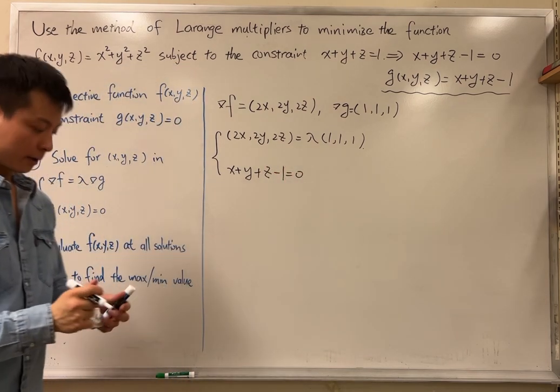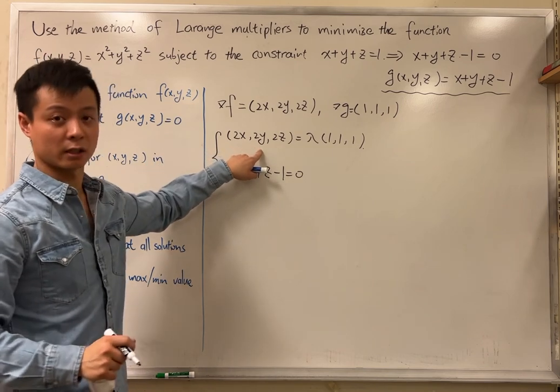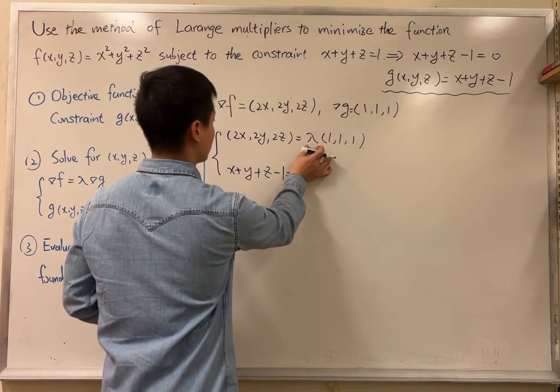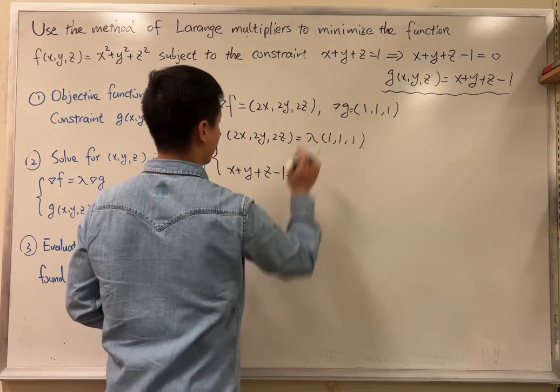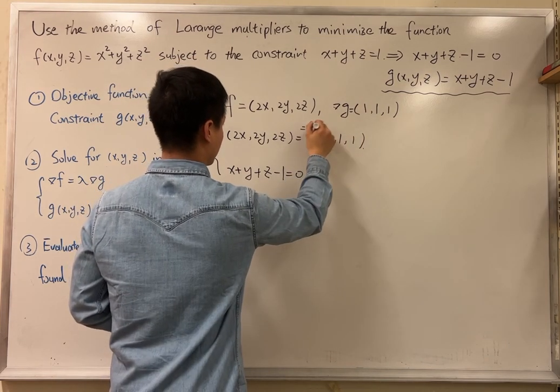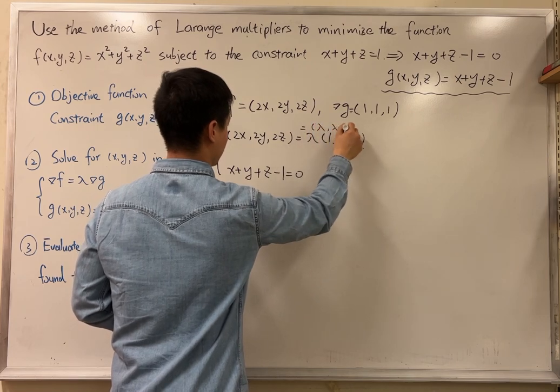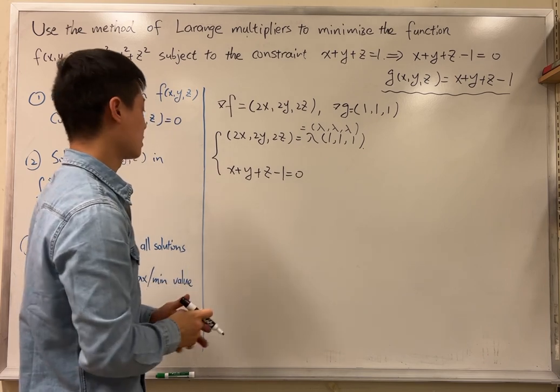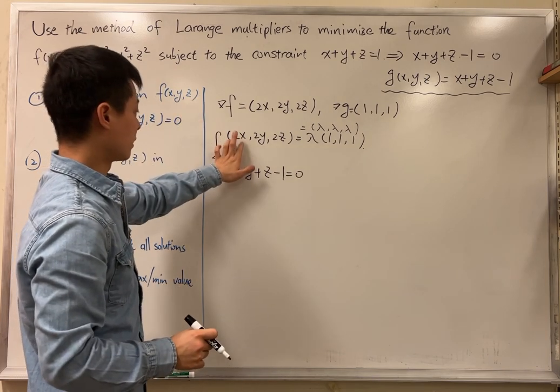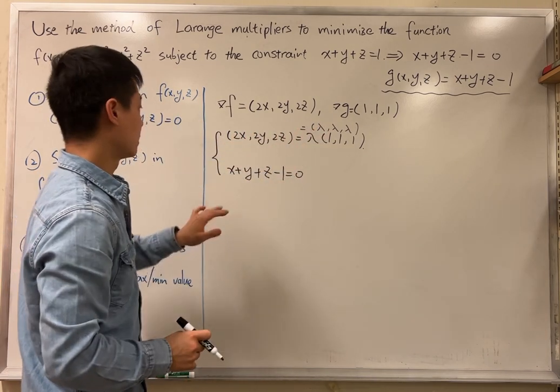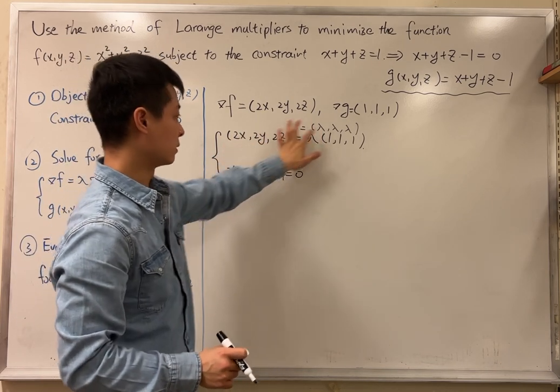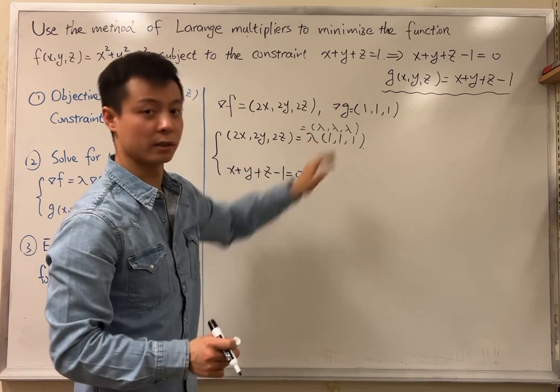As I said, the first equation here is going to give you three equations. We see that by distributing this lambda into this vector, so this can be written as lambda, lambda, lambda. And then we will have three equations by equating the corresponding components. For example, 2x equal to lambda. Second component, 2y equal to lambda, and then 2z equal to lambda.